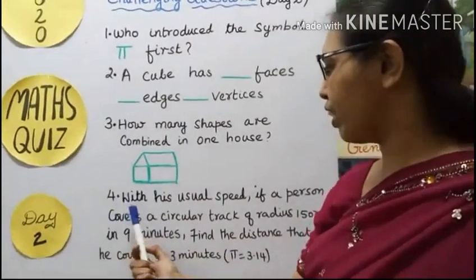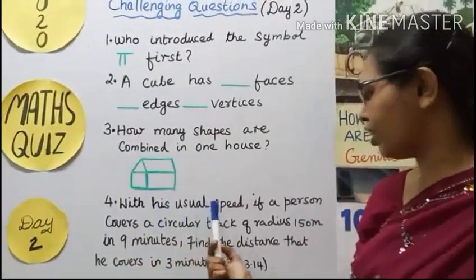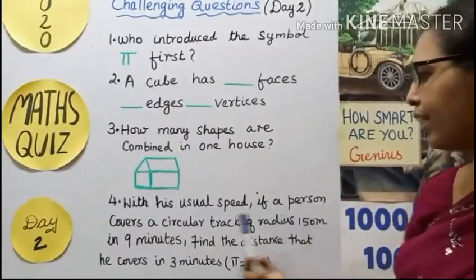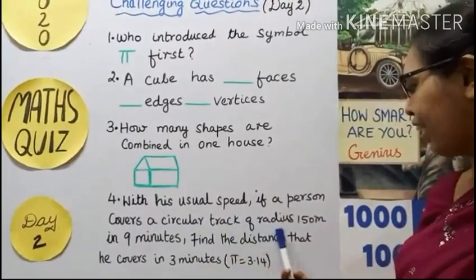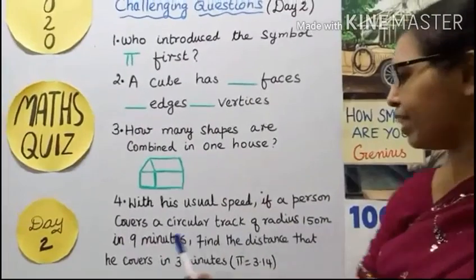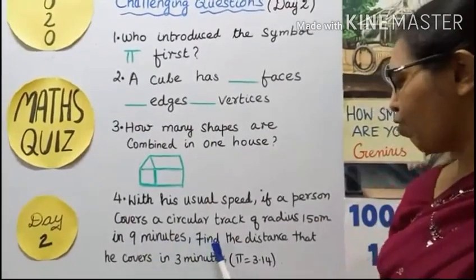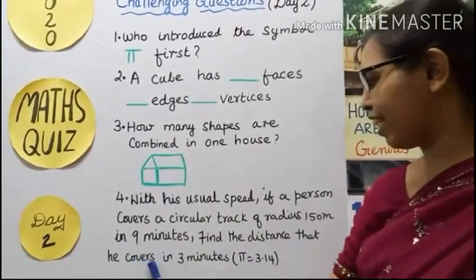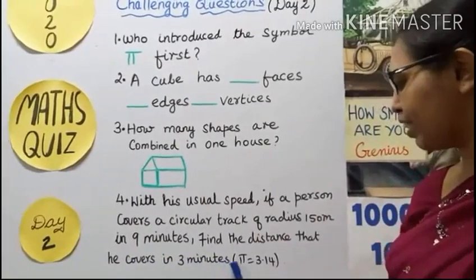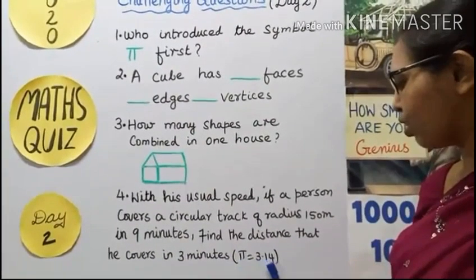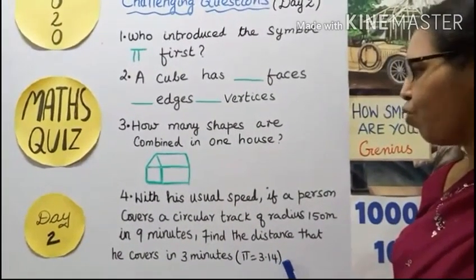Fourth question: With his usual speed, if a person covers a circular track of radius 150 meters in 9 minutes, find the distance that he covers in 3 minutes. Use pi equal to 3.14.